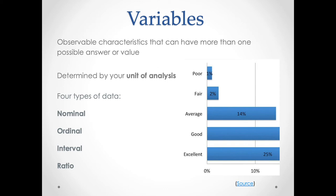Interval data can be ranked, and we know the exact difference between them. Height is a good example. If you're 170 centimeters tall, you are 2 centimeters shorter than someone who is 172 centimeters tall, and 2 centimeters taller than someone who is 168 centimeters tall. Interval data can be ranked, and we know the exact difference between them.